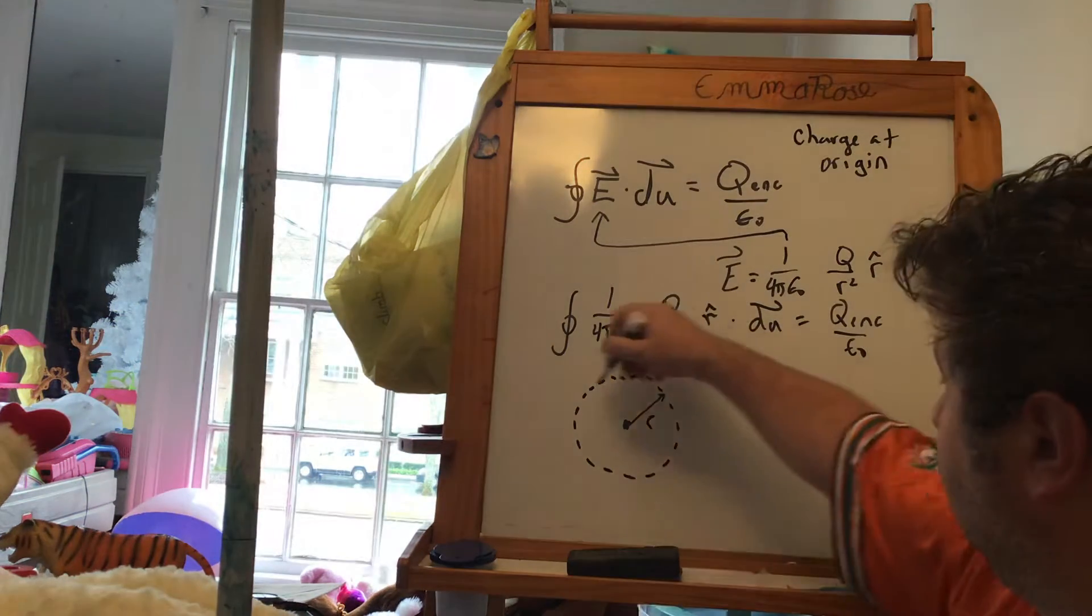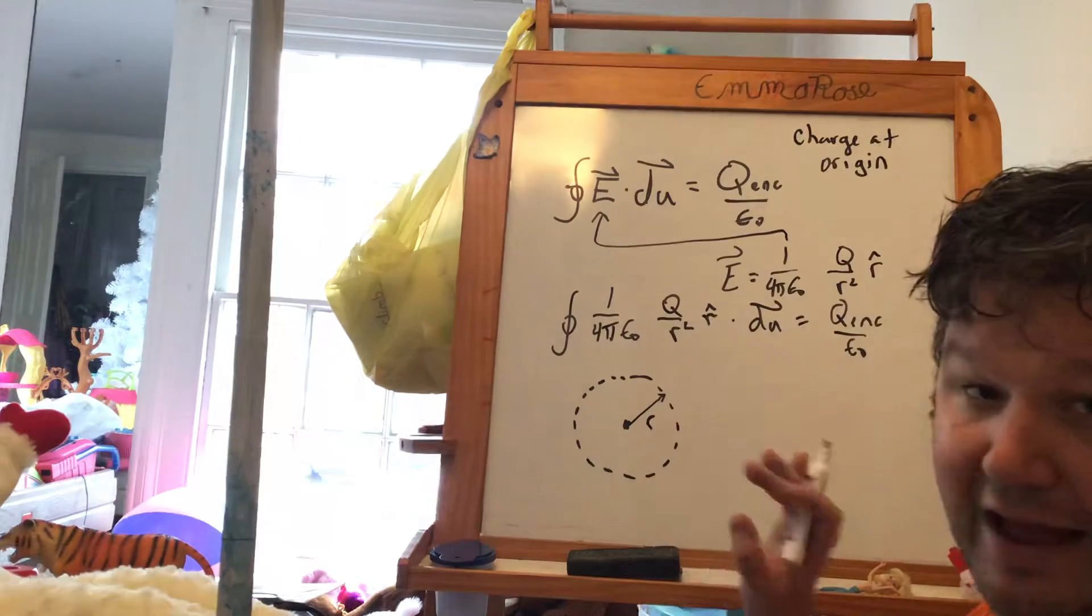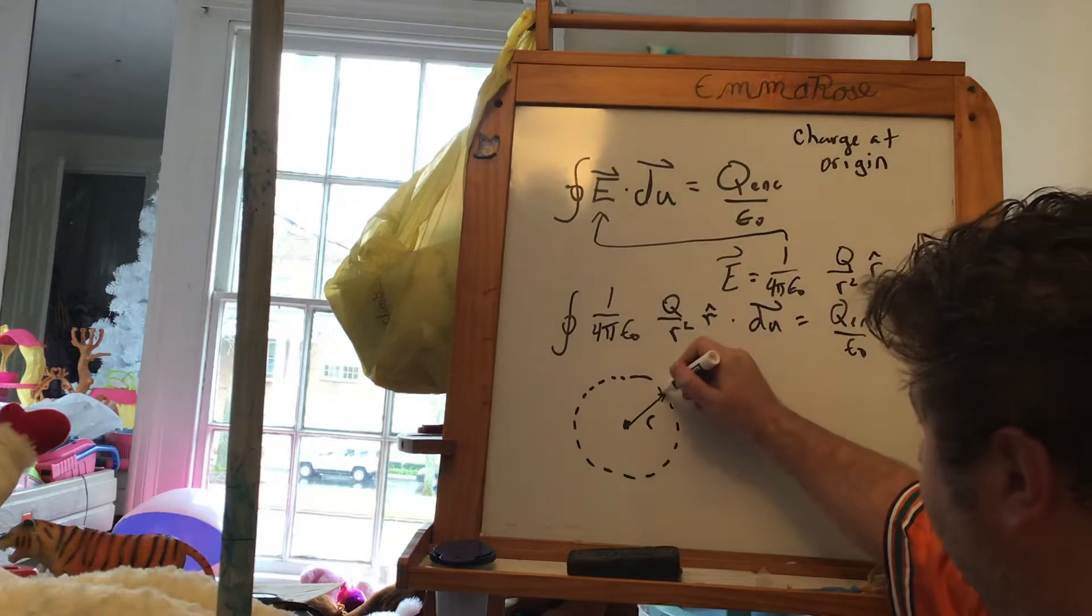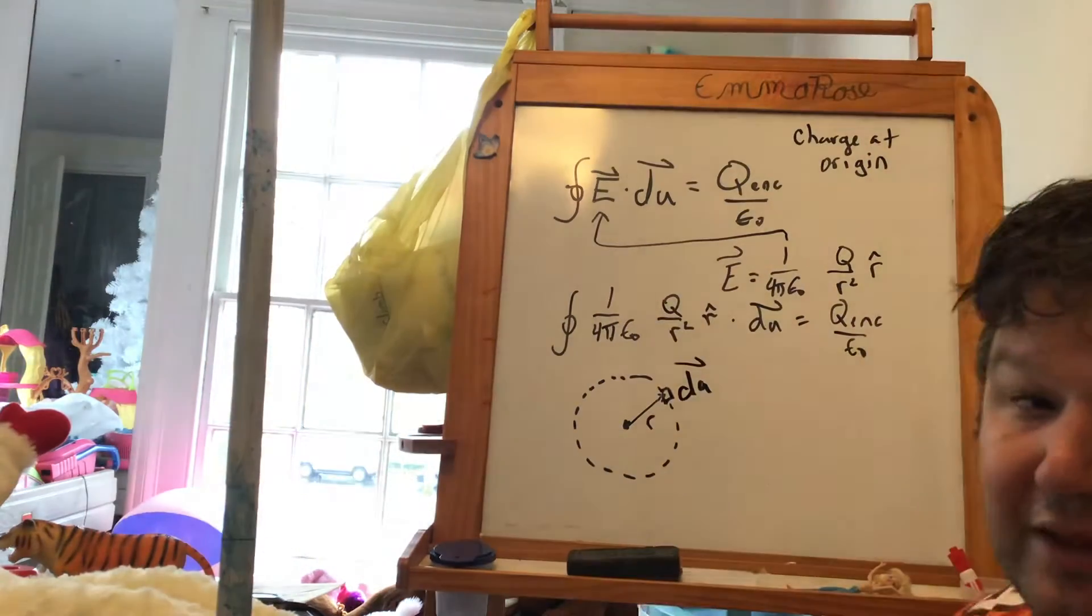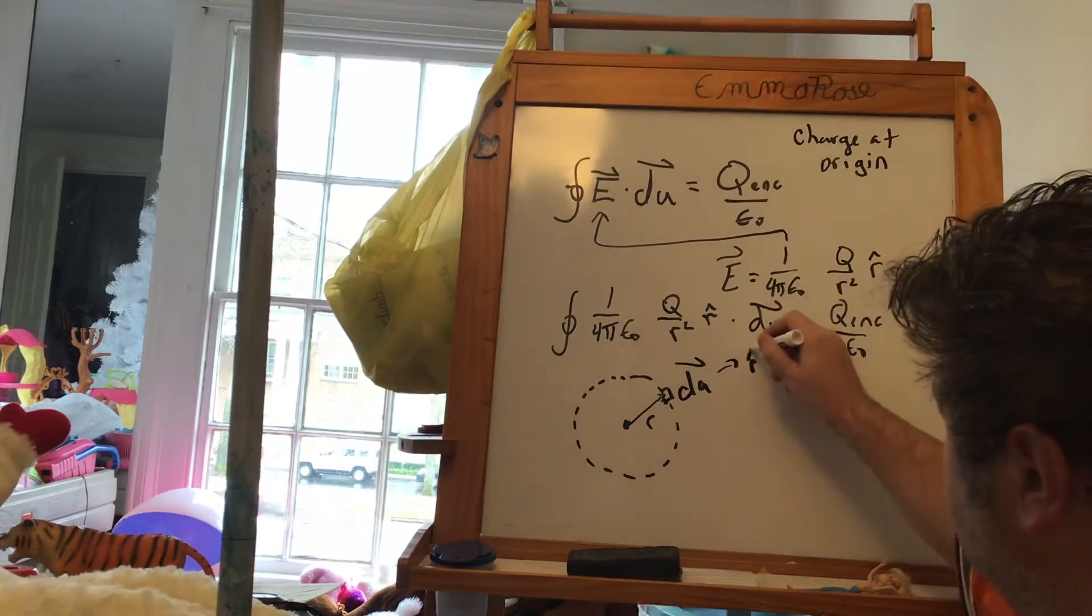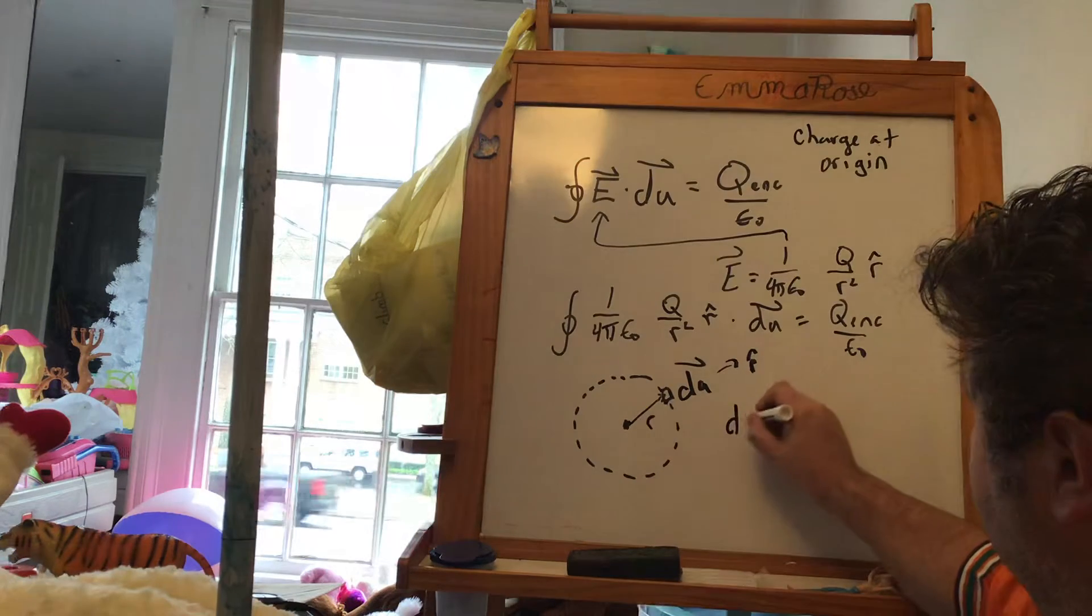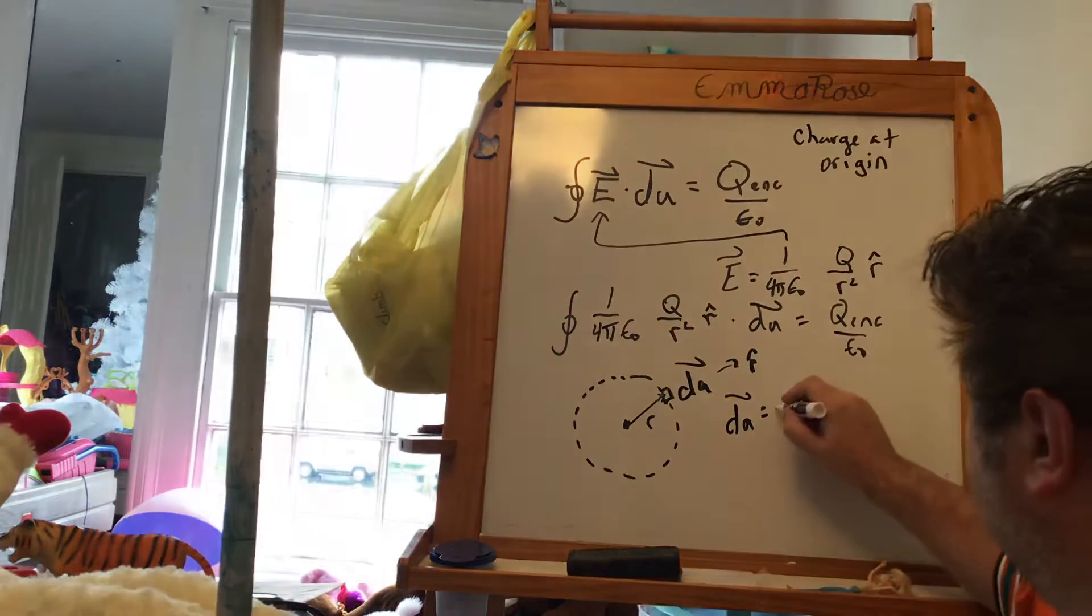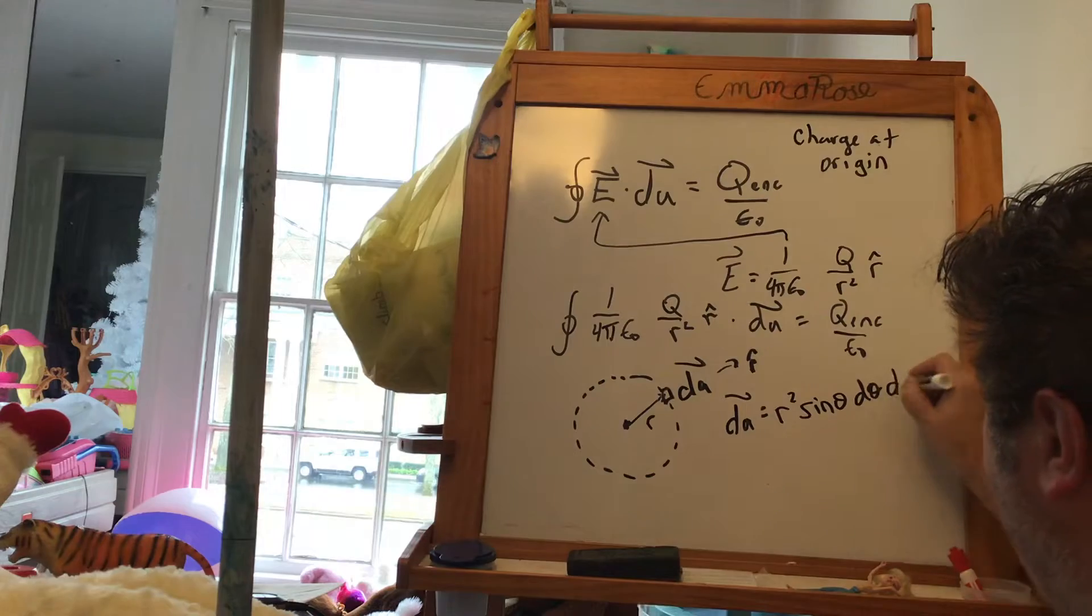We drew a spherical Gaussian surface around this point, and it's centered directly around that point in the center. So what's the area element here, dA? Well, first off, it's going to point in the same direction as the radius. So dA is going to point out, r hat. It's going to be the surface area element. So that's going to be r squared sine theta d theta d phi.